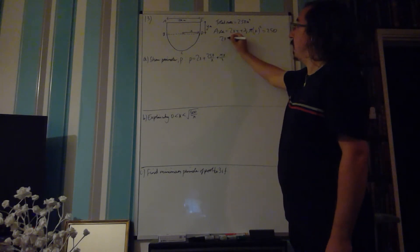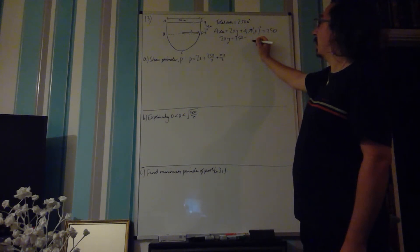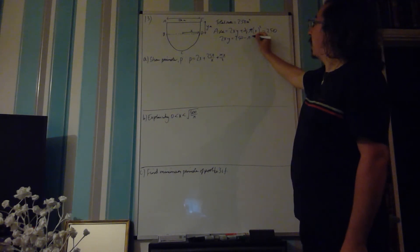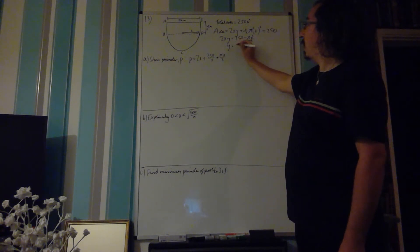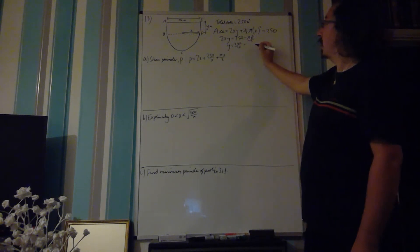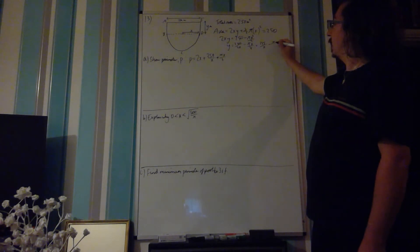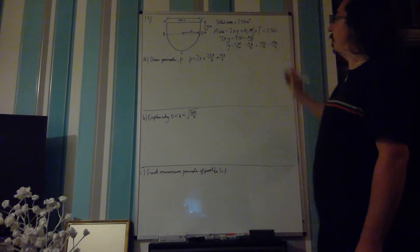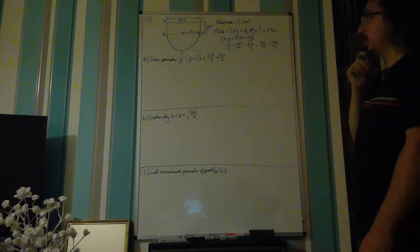I can say that 2xy is equal to 250 minus pi x squared over 2. So y is going to be 250 over 2x minus pi x over 4, or 125 over x minus pi x over 4. That's going to be my expression for y. We're going to use that shortly.